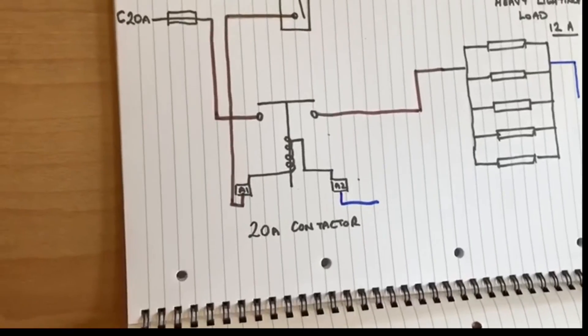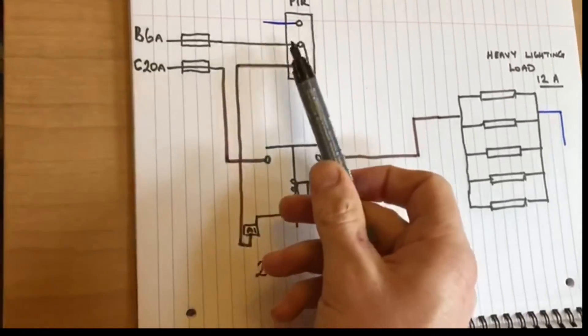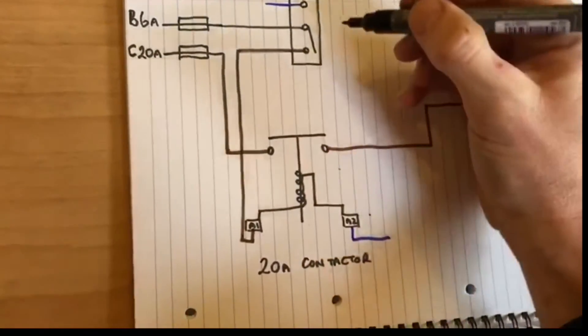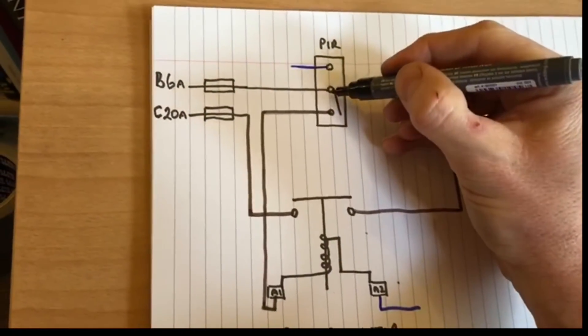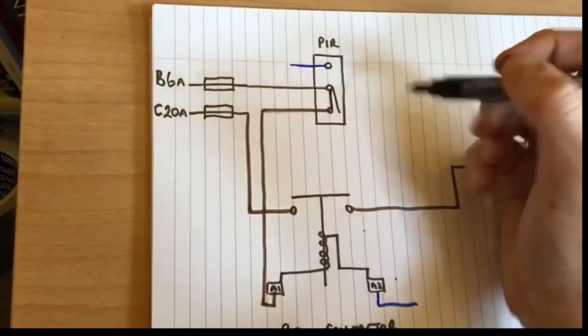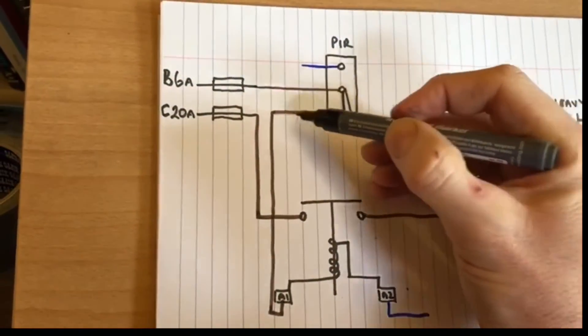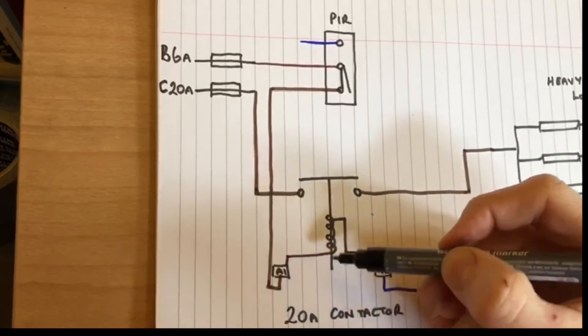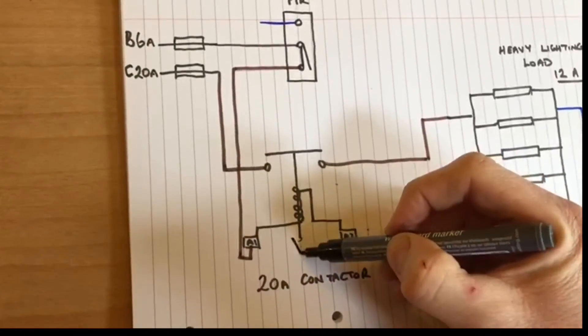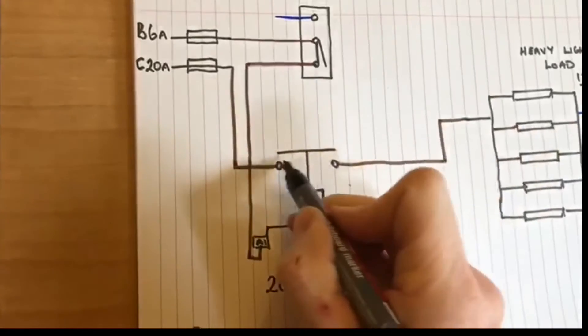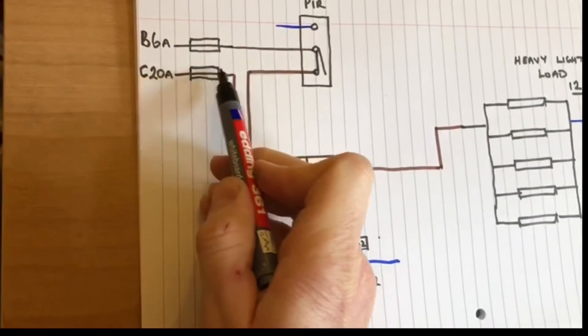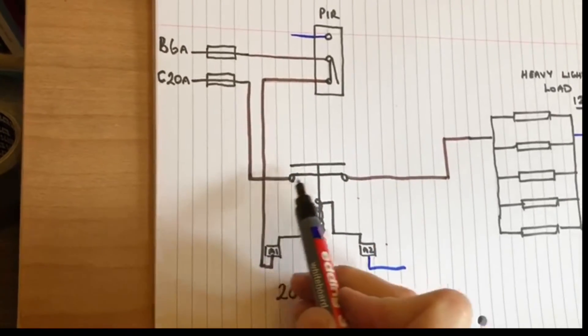So let's just talk through the operation of the circuit here. So again, we've got our permanent live feed here. So if someone is detected, or if this detects something, this will close. So the circuit now is going through to the coil, through to terminal A1. It pulls this down, it will make connection here, which then brings the full load coming through to the lights and the lights will illuminate.